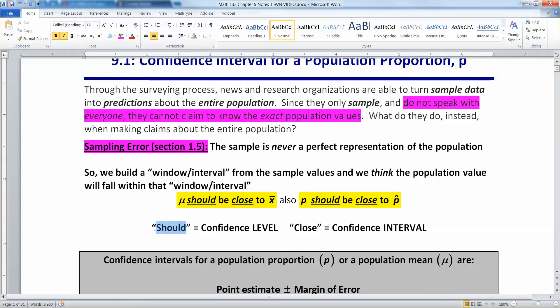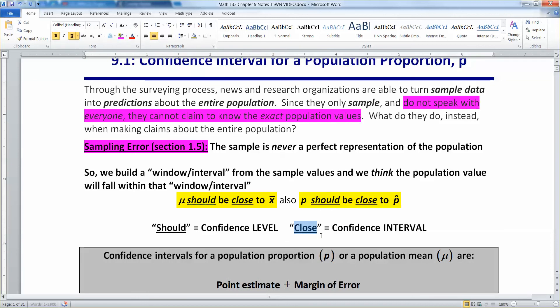Now the word 'should' is actually something called my confidence level. And the word 'close' is something called my confidence interval. And we're going to keep coming back to this idea over and over that your sample and population values should be close to each other. You just don't know how close. And the close part is what confidence intervals are all about. And then you're going to build them based off of how confident you want to be. And that's called your confidence level.